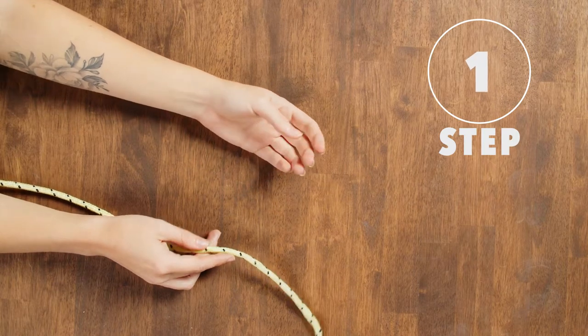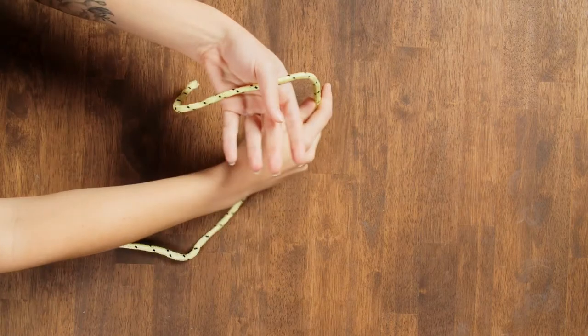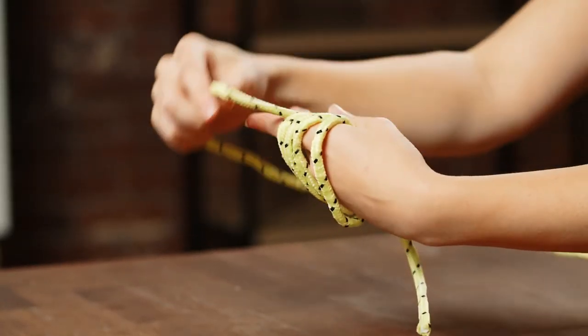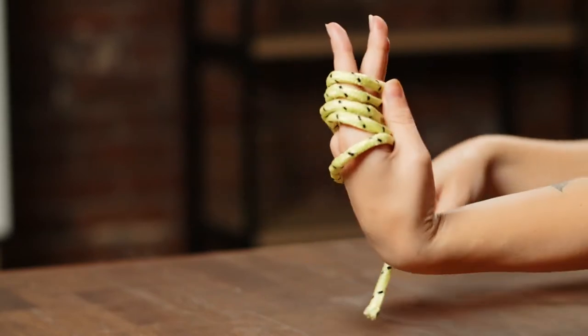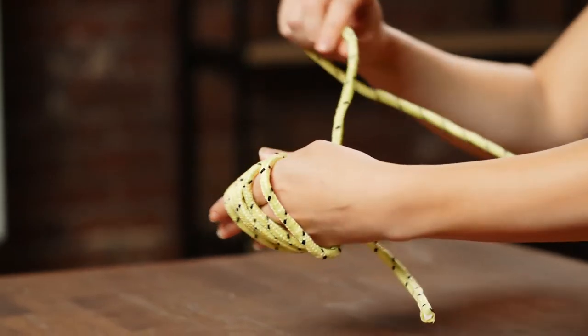Step 1. Hold the end of the rope in your non-dominant hand and wrap the rope around all four of your fingers five times. Make sure it's not too tight around your fingers. When you're done, you should have five lines of rope across your hand and a circle of rope if you look at it from the side.